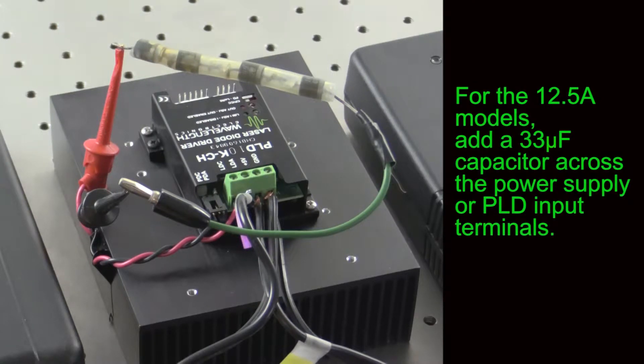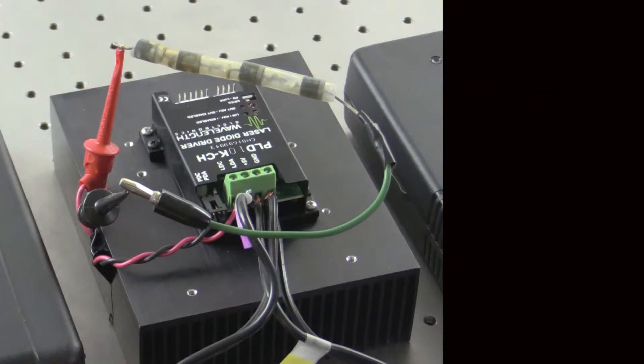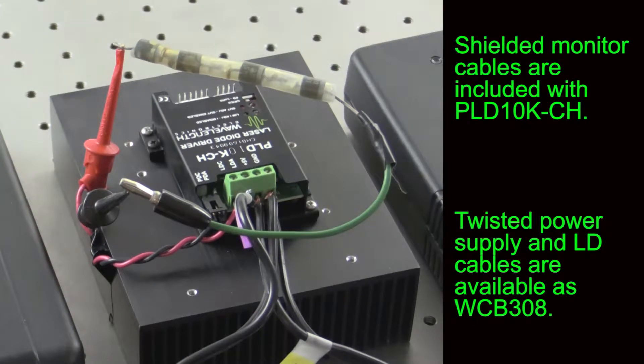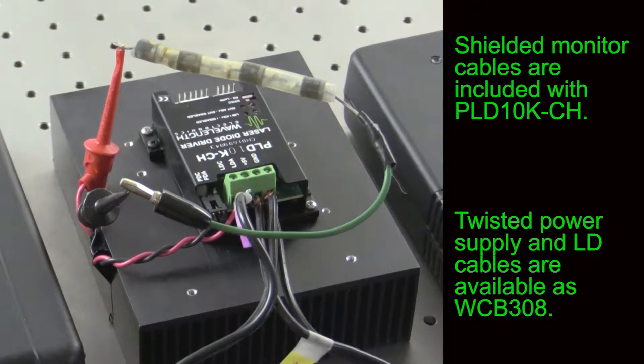For the 12.5 amp models, add a 33 microfarad capacitor across the power supply or PLD input terminals. Shielded monitor cables are included with the chassis mount. Twisted power supply and laser diode cables are available.